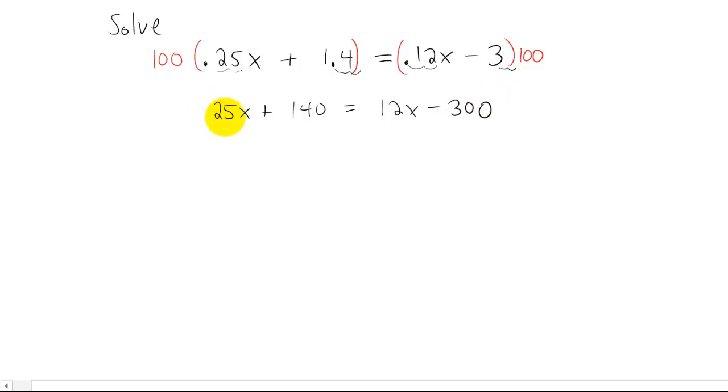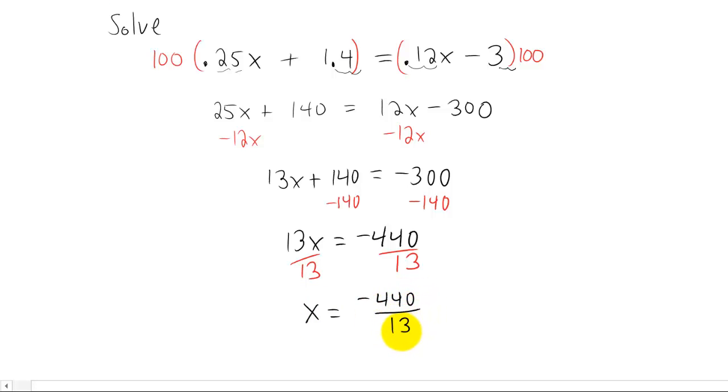We go about our business. We get all of the terms with x in them to one side of the equation. In this case, I'm going to subtract by 12x. And then we get all of the terms that don't have x's in them to the other side of the equation, in this case, by subtracting by 140. Then we want to isolate our variable, in this case, by dividing by 13. And now we've got x by itself. It's a really big, crazy-looking fraction. It's negative 440 over 13. Now, if we could reduce that, we would. 13 is a prime number, so I don't actually think we can reduce this fraction. So I'm going to box it up and call that the answer.